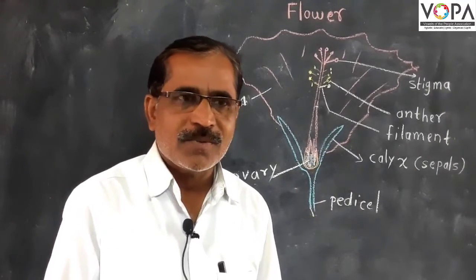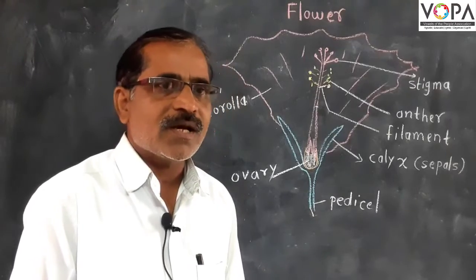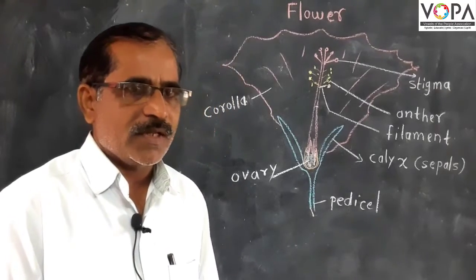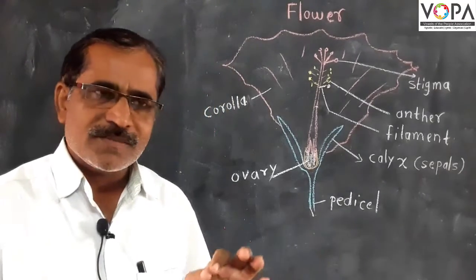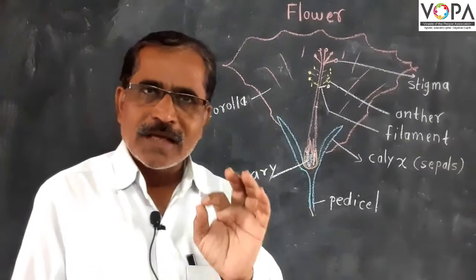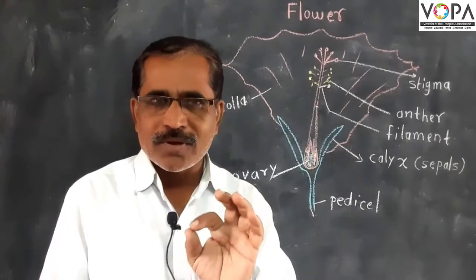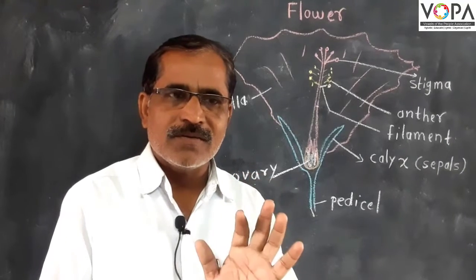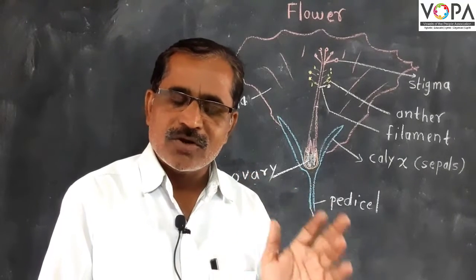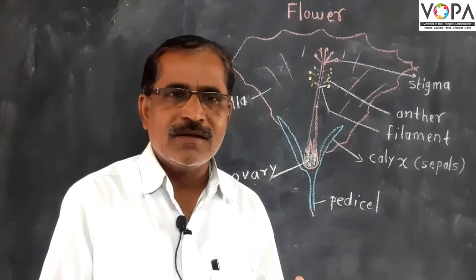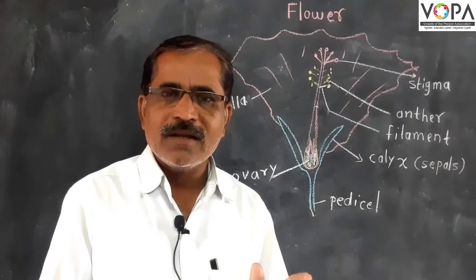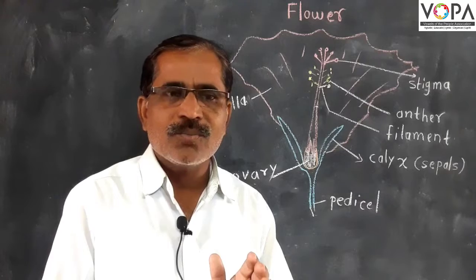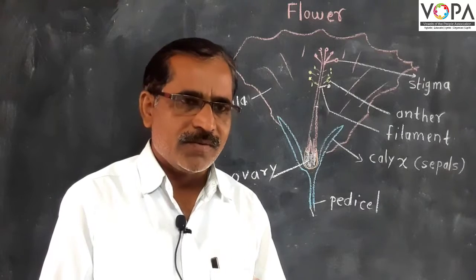The next part of the flower is gynoecium. Androecium is the male reproductive part of the flower, and gynoecium is the female reproductive part of the flower.